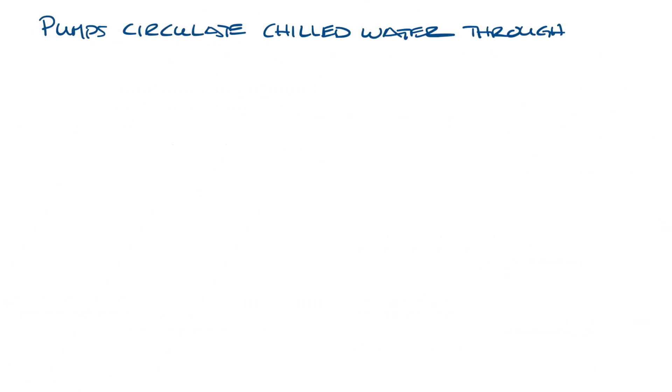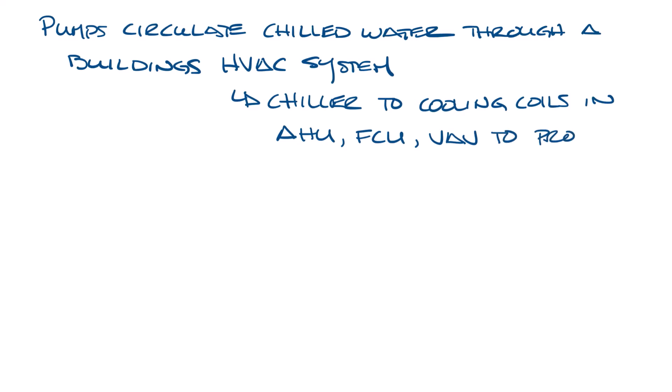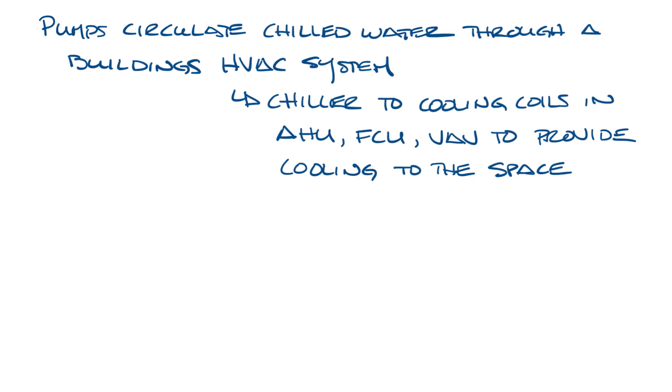Pumps circulate chilled water throughout a building's HVAC system, from the chiller, through the cooling coils in an air handler, fan coils, or VAV boxes to provide cooling to the occupied spaces. So let's move this up and let's take a look at the different types of chilled water pumping systems.